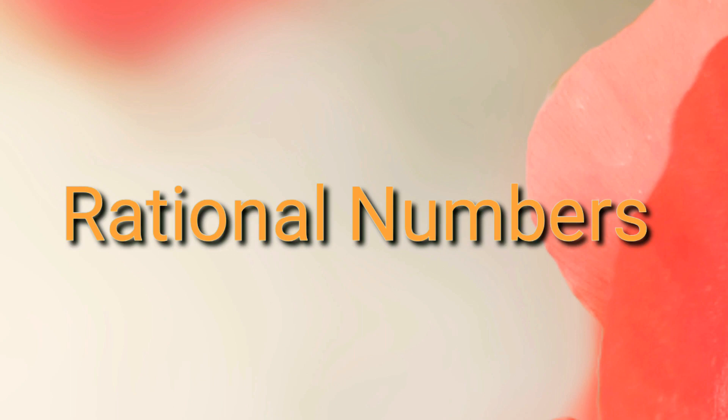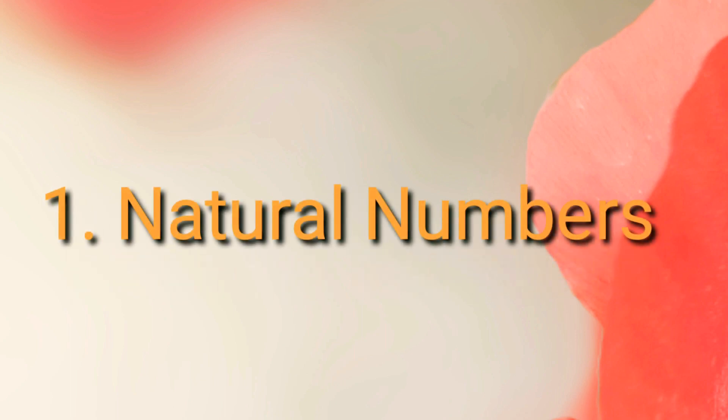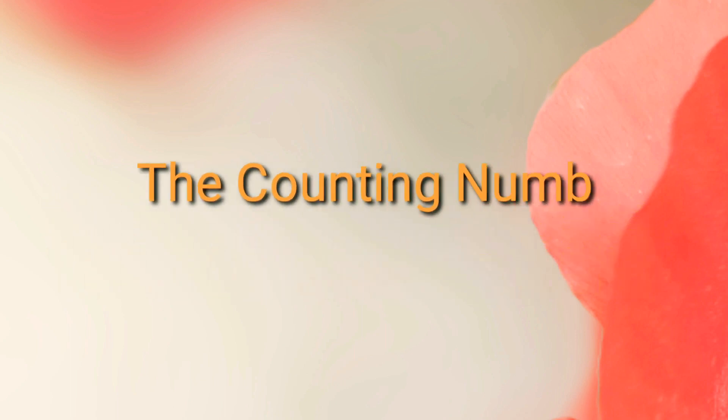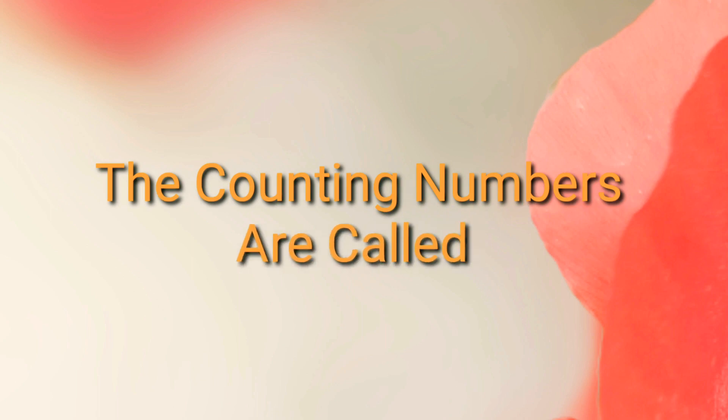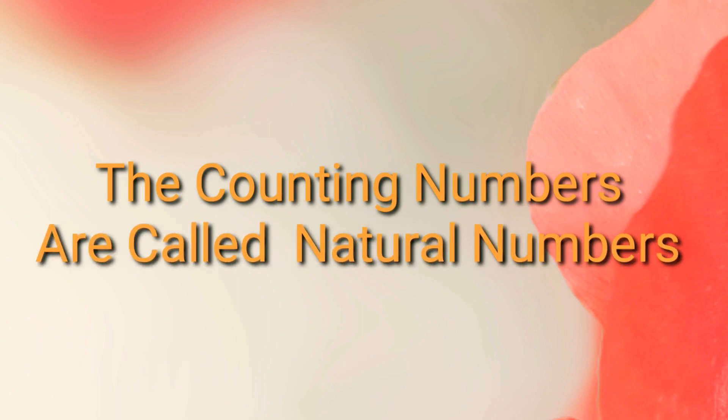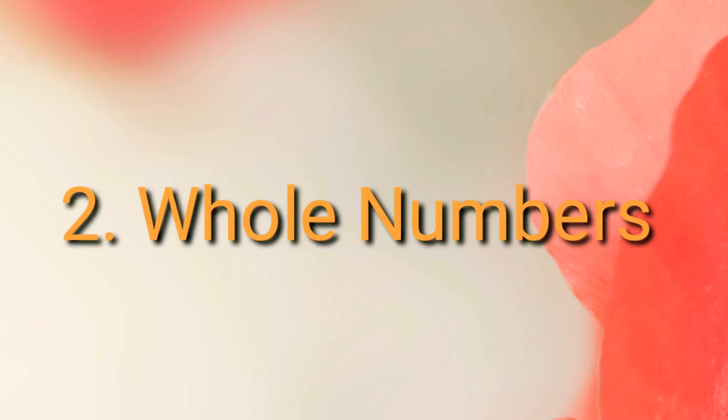First are natural numbers. The counting numbers are called natural numbers. For example, 1, 2, 3, 4, and so on. The next category is whole numbers — the collection of all the natural numbers including zero are called whole numbers.